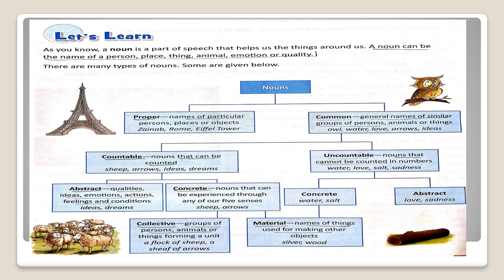Collective noun. Group of persons, animals or things forming a unit. A flock of sheep. A sheaf of arrows.